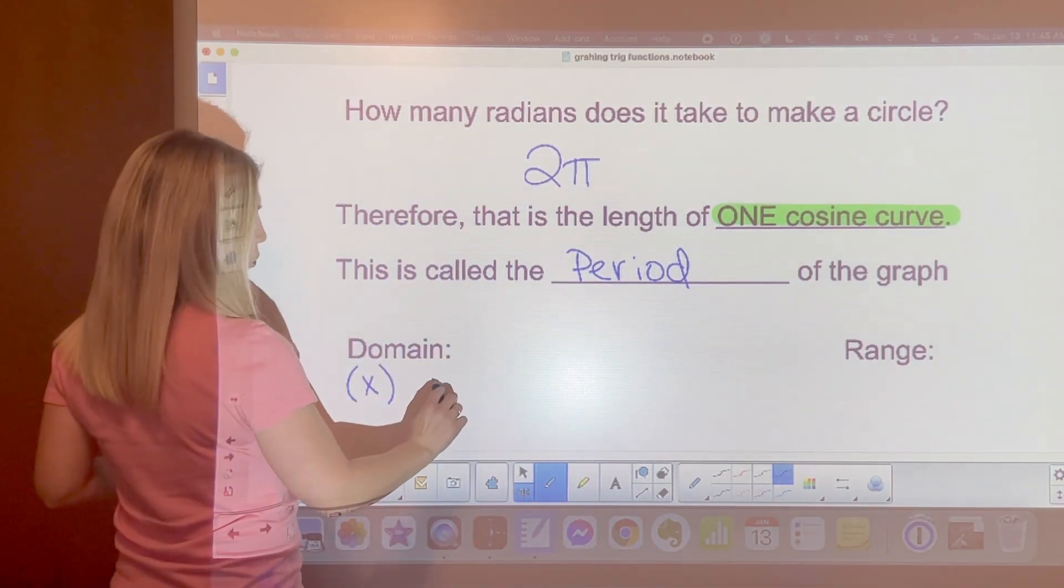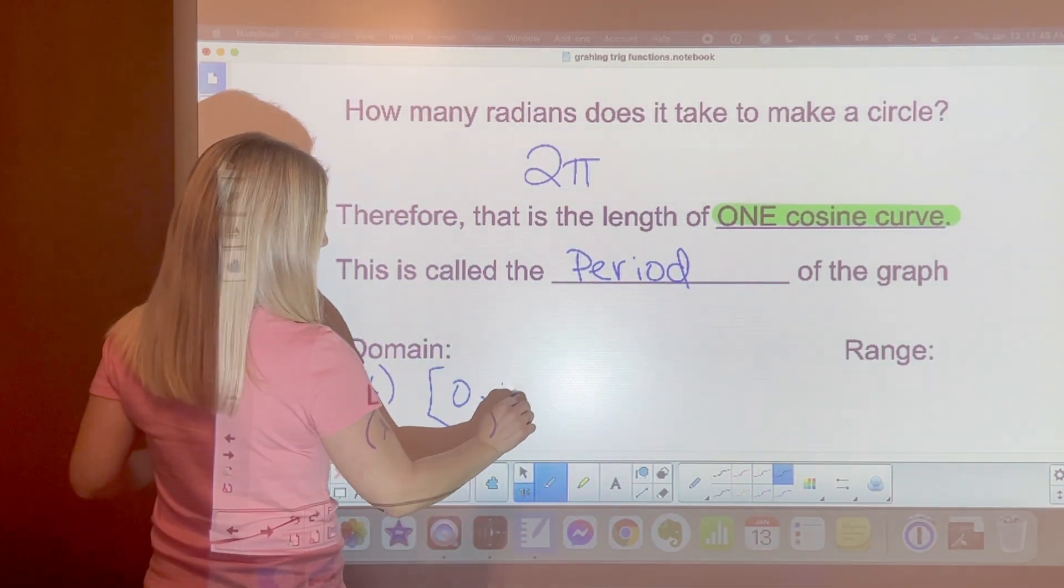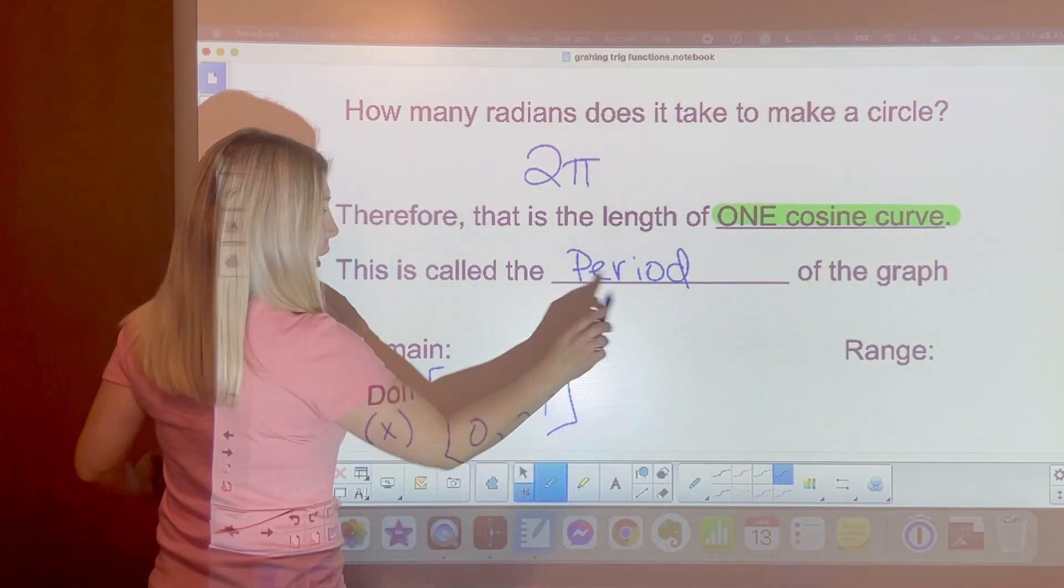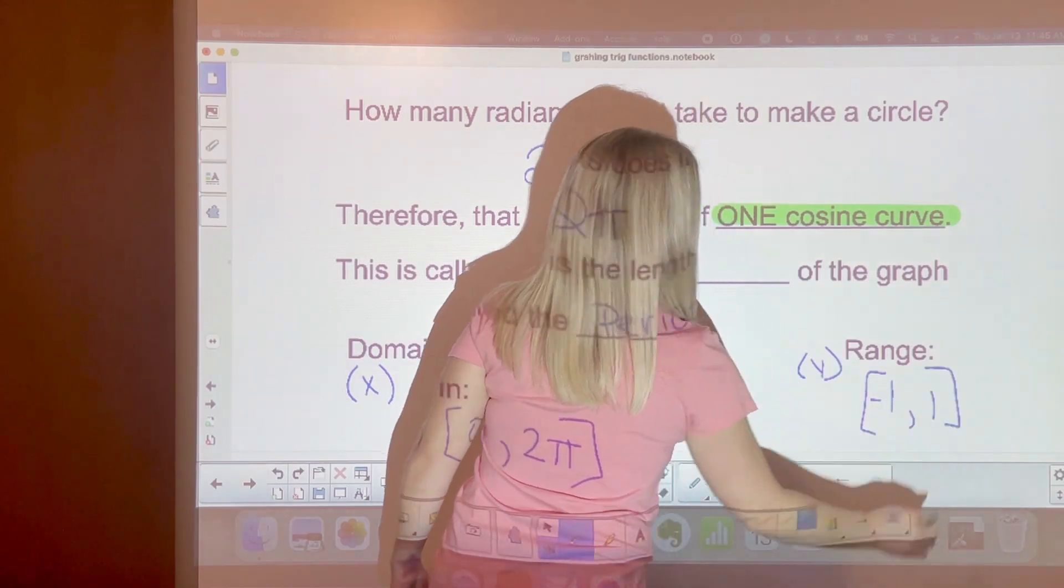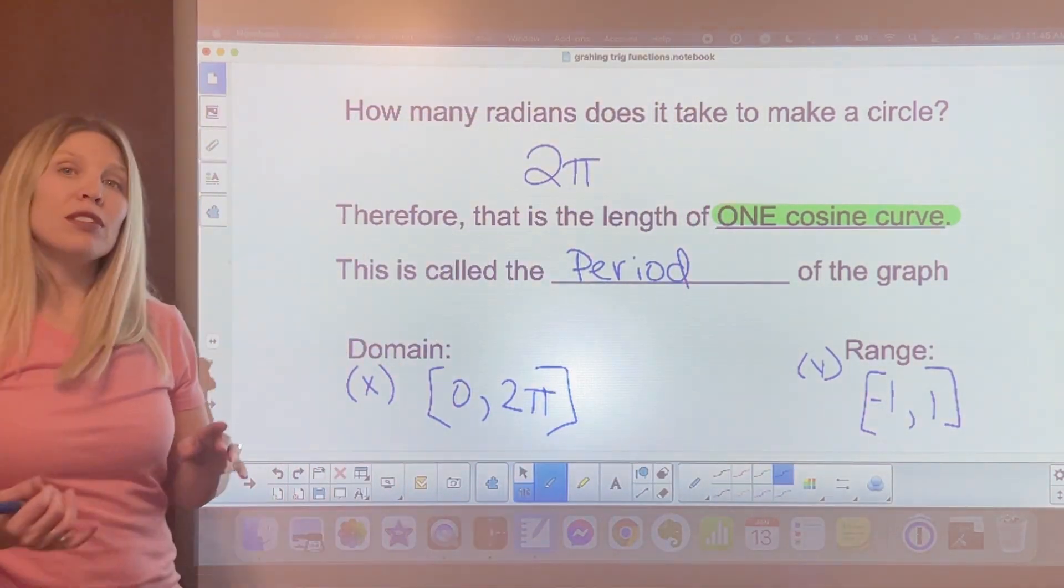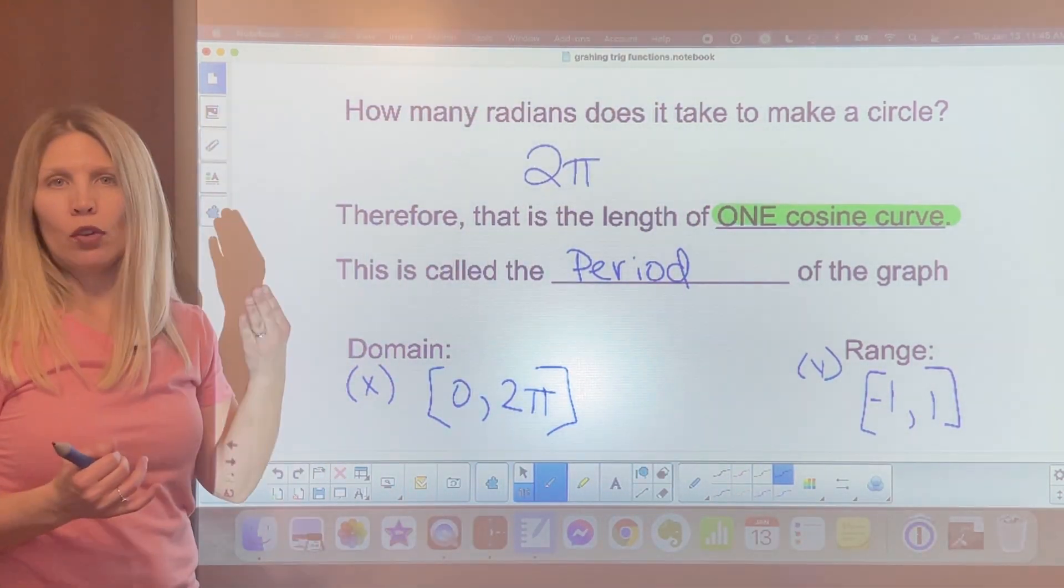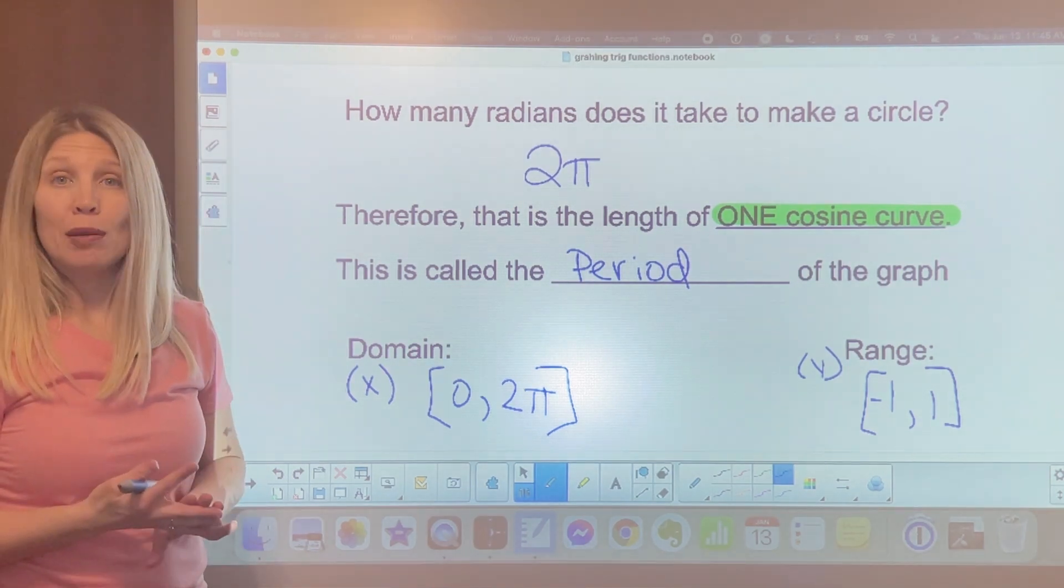And again, our domain, our x values, right? They went from 0 to 2 pi. And our range, our y values, went from negative 1 to 1 again. They have the same length because they're both around the curve. They have the same domain and they have the same range.